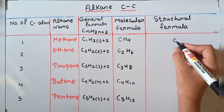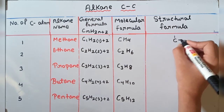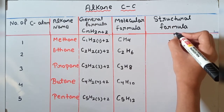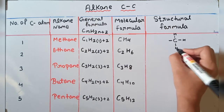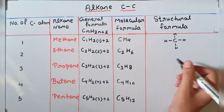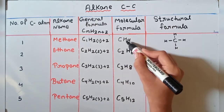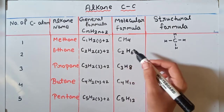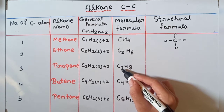Structural formula for methane: yahan par 1 carbon hai, hydrogen kitne hain — 4. Aapko pata hoga carbon tetravalent hoti hai, matlab carbon ki valency 4 hoti hai, to carbon char hi bond banata hai. So yahan par rahega 1, 2, 3, 4 — hydrogen show kar denge. 1 carbon aur 4 hydrogen — okay.